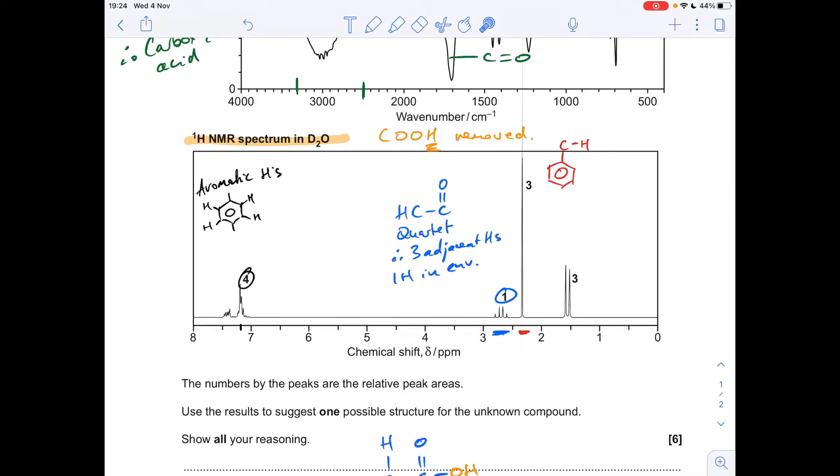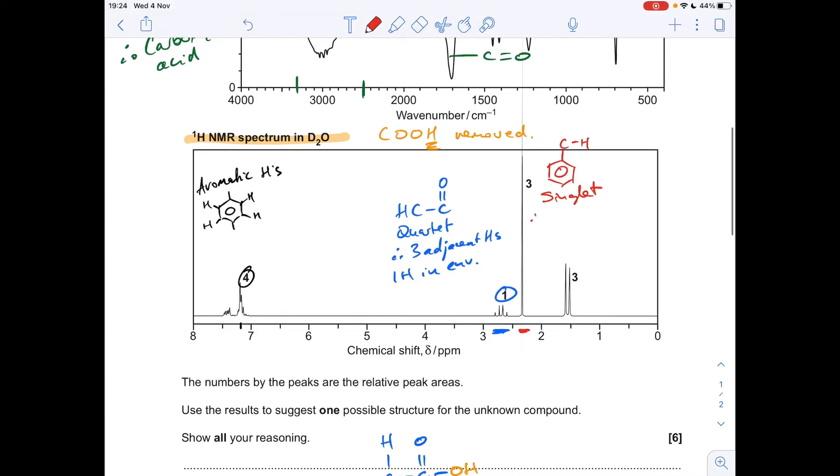So what are the key things we would need to write about this? Well, we'd need to say that it's a singlet. And what does that mean? It's not bonded, or there are no adjacent hydrogens to this. There are three, it's got an area of three, so there are three hydrogens in the environment.